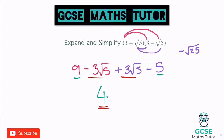This is quite a key result — if you look at the original question, they were the same brackets: one had a positive, one had a negative. So it's very similar to algebra when you have a difference of two squares. Those two middle pieces cancelled each other out and our final answer is 4.